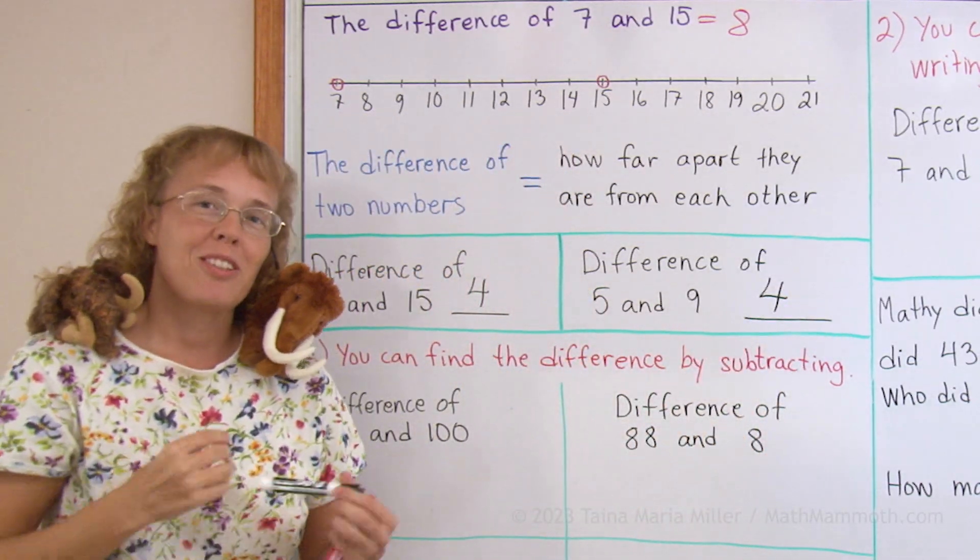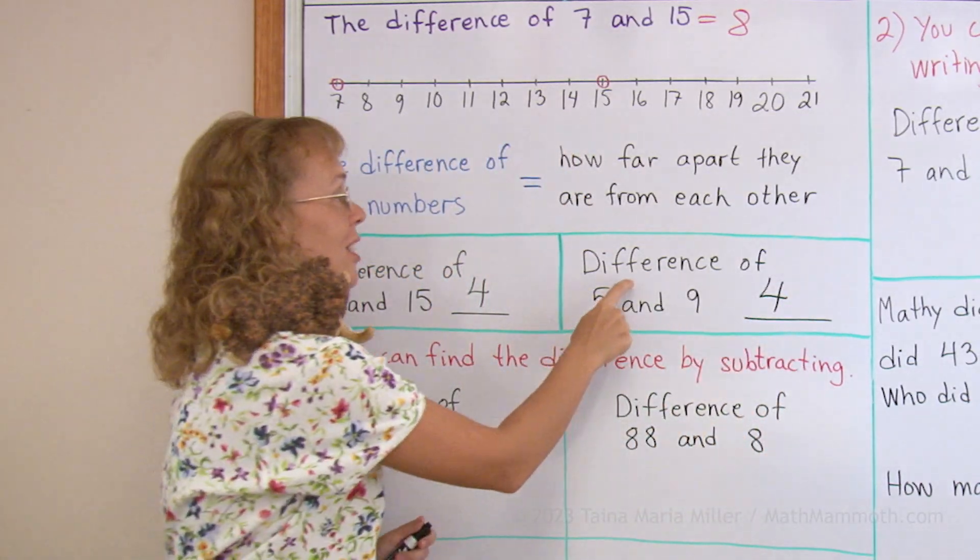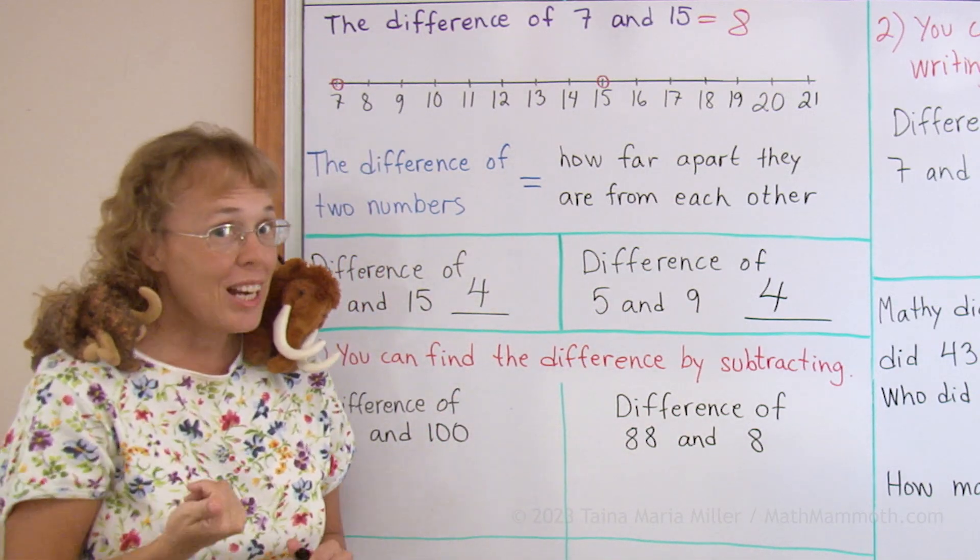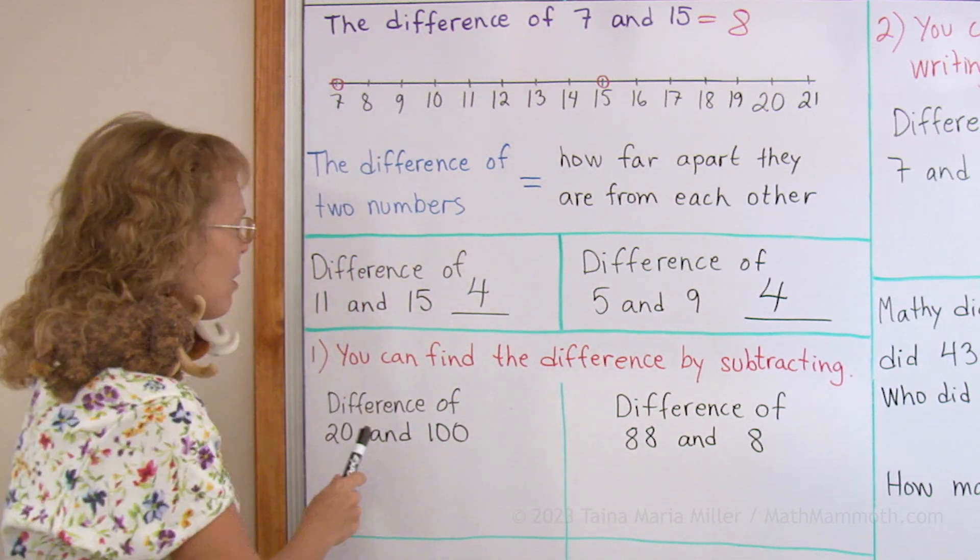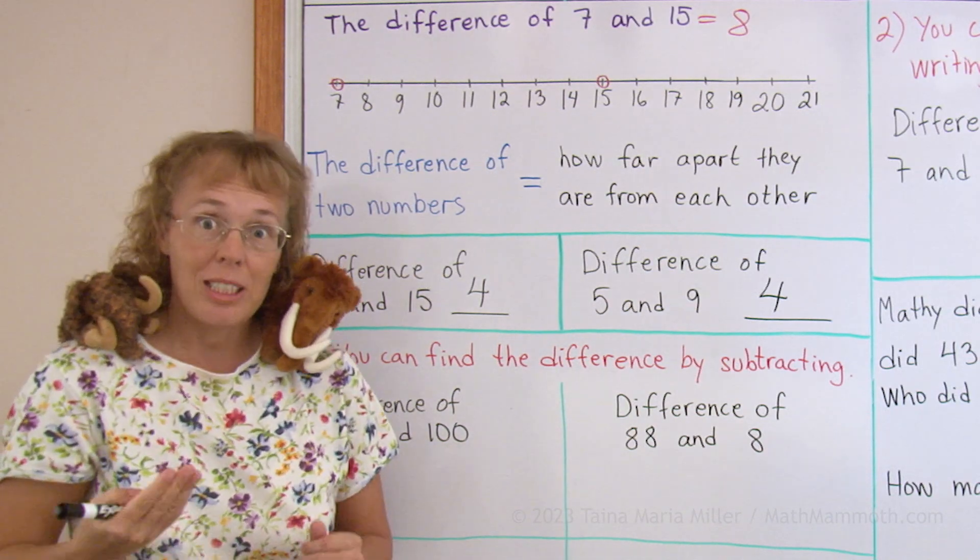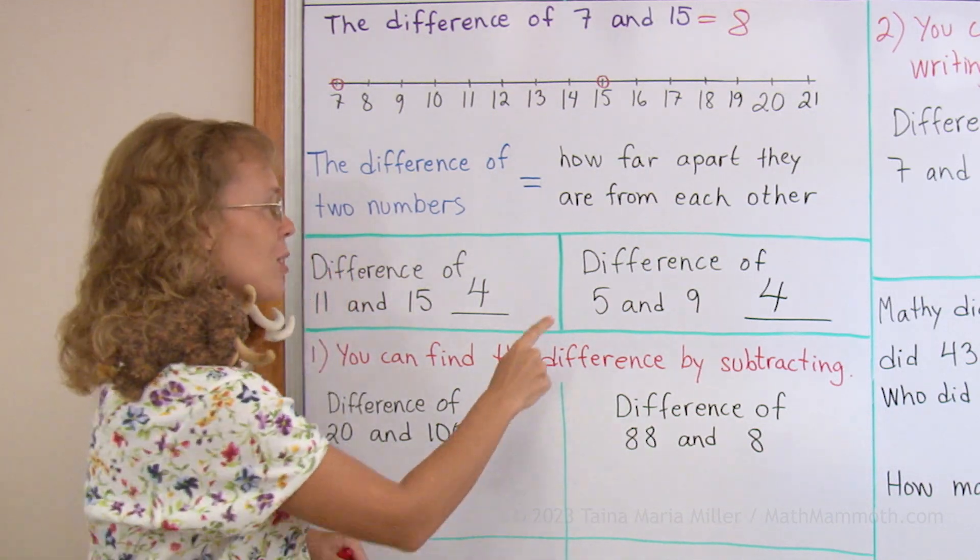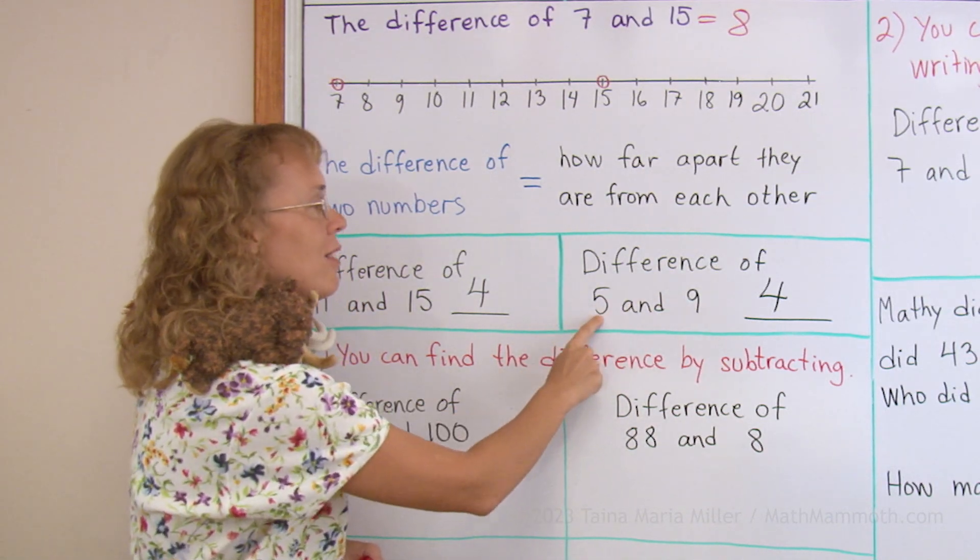But of course, normally we don't use a number line to find the difference of two numbers, but we either subtract or add. So one way to find the difference is by subtracting the two numbers. For example, here I can subtract 9 minus 5 and get 4.